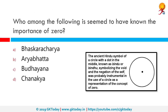Who among the following seemed to have known the importance of zero? The correct answer is Bhaskaracharya. Aryabhatta is the person who created the numerical symbol for zero; however, Bhaskaracharya is one of the mathematicians who truly understood it. Around 500 AD, Aryabhatta, an Indian mathematician, devised a number system and the symbol he used for zero was also used to represent an unknown element. The Indian mathematicians Bhaskaracharya, Mahavira, and Ramagupta worked on this new number and tried to explain its properties.